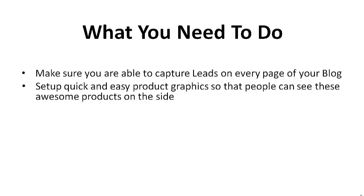The next thing is to set up a quick and easy product graphic so that people can see these awesome products on the side. This is $10-an-hour activity — outsource it. Use Fiverr. If you can do it in 15 minutes per item or less, great, go ahead and spend the time. But just get the graphic done and make it look appealing so that people will click on it and want to opt in.